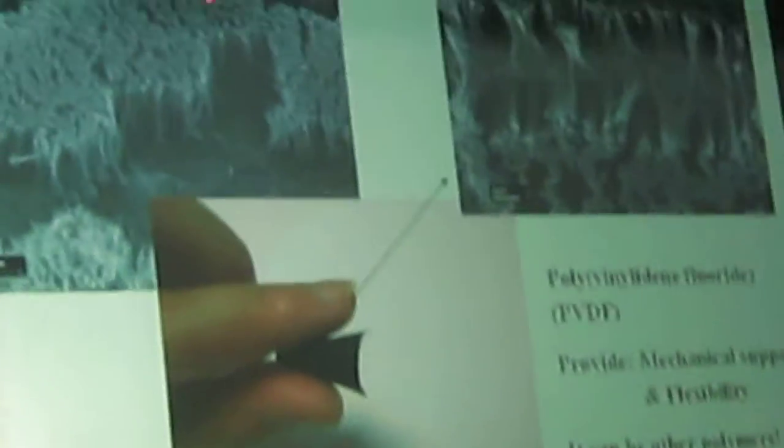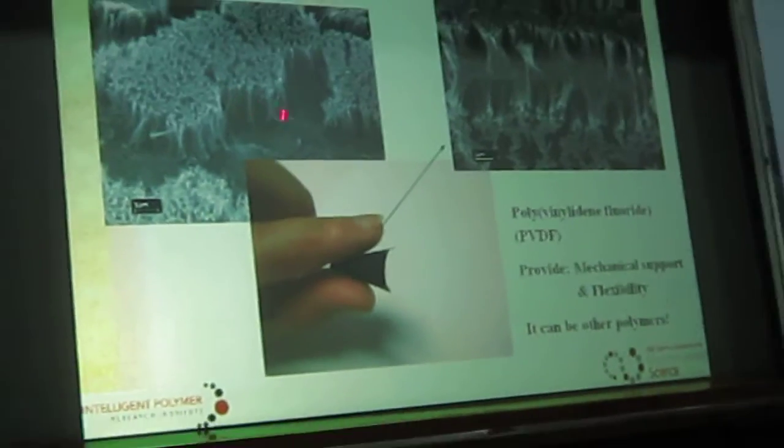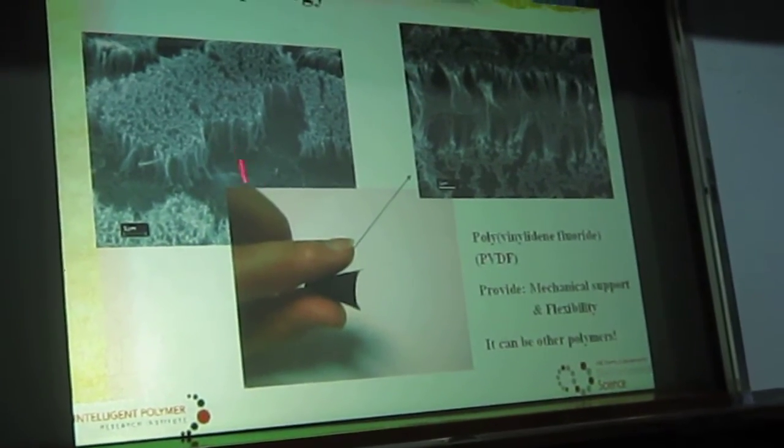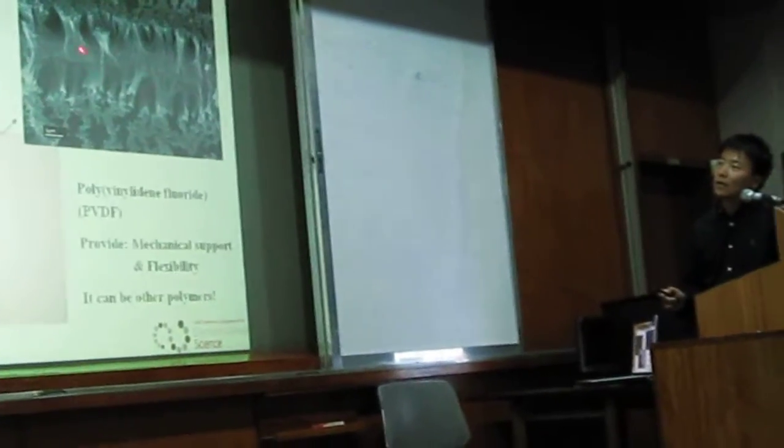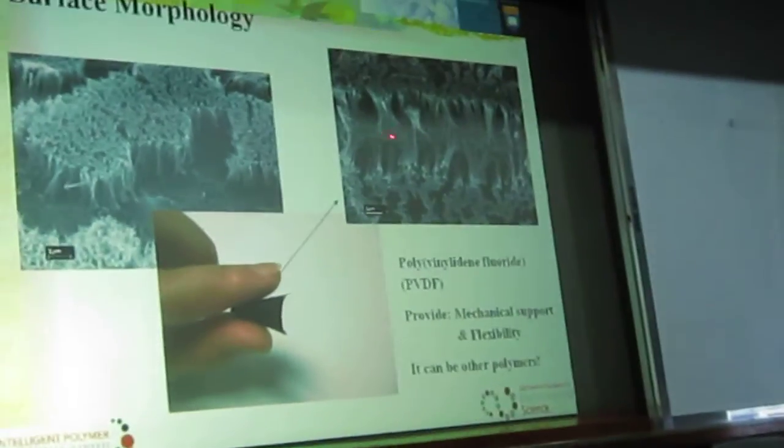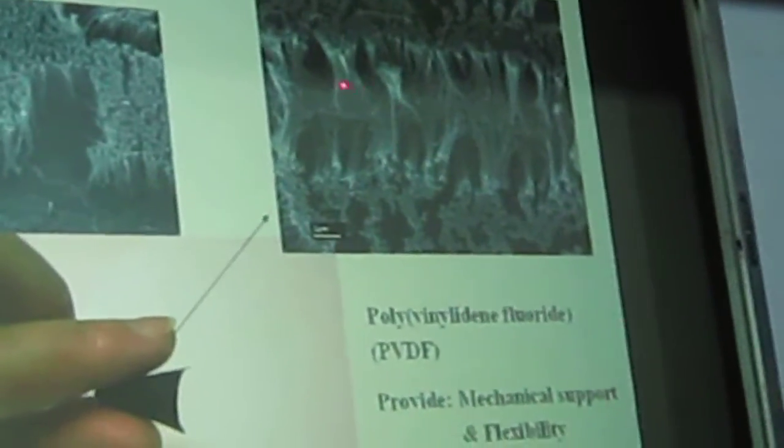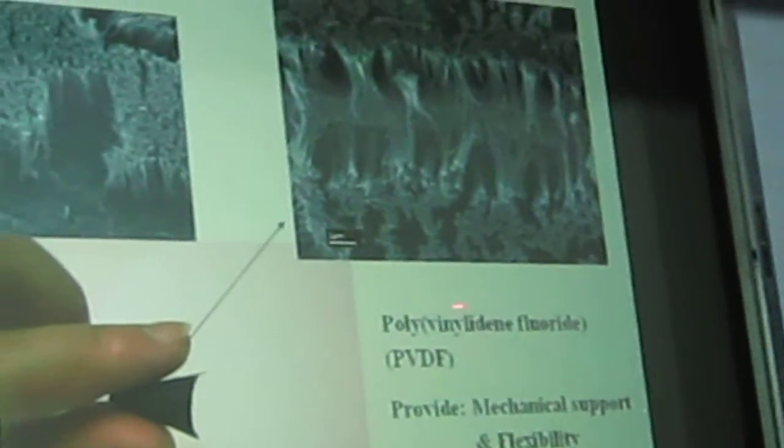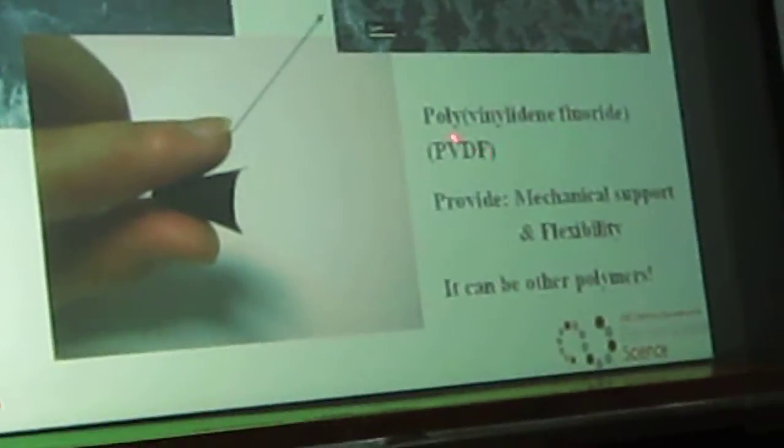And also surface morphology we find out is this. This is clearly shown aligned tube sits on the membrane structures. Flexible, and even when we bend it, we see the roots of these carbon nanotubes. It's physically trapped into the membranes, which are both provided by PVDF, with the mechanical support and flexibilities.